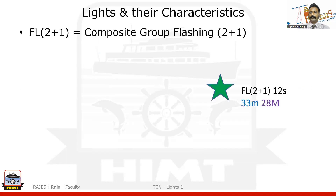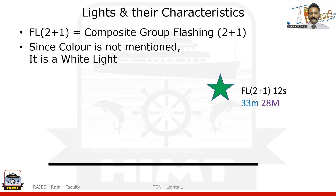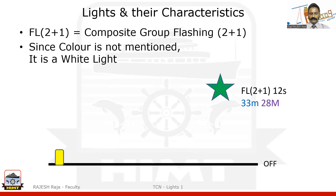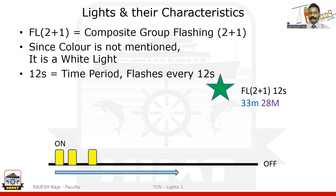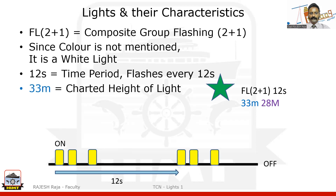Composite group flashing two plus one: a total group of two plus one with a small separation between them, white light. You can see two flashes, then a small gap and the third flash, followed by a very long gap of 12 seconds before the same group starts again. 33 meters is the charted height, and 28 nautical miles is the nominal range.